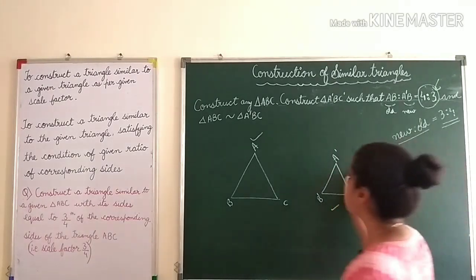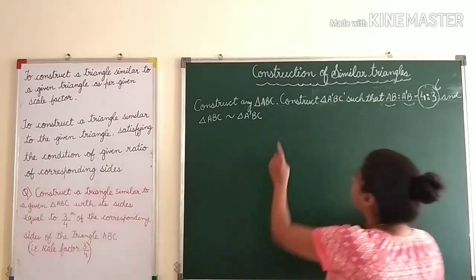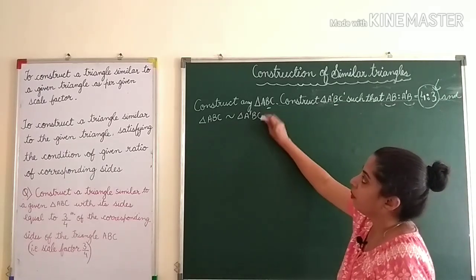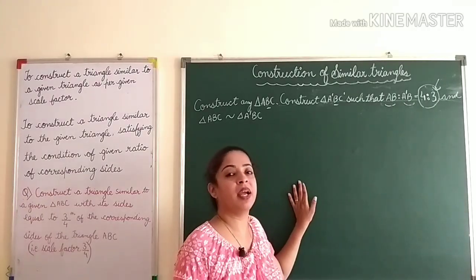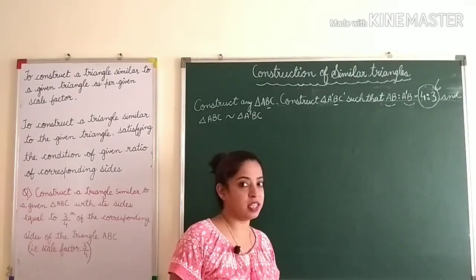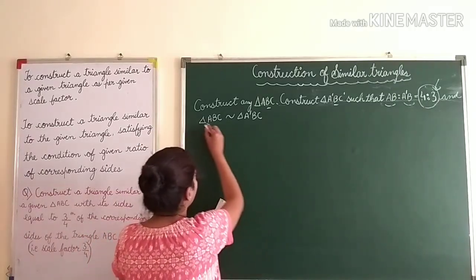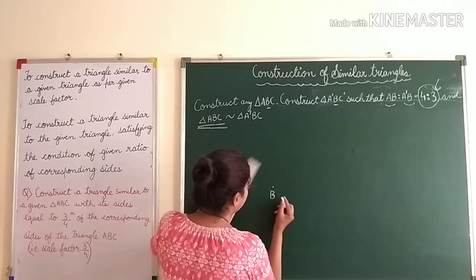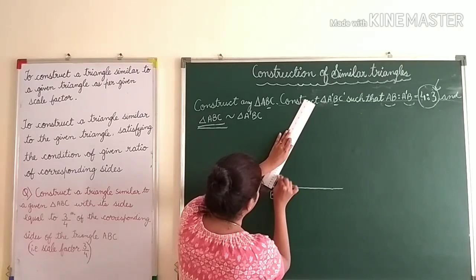Now let us go ahead with the construction. As the question suggests, B is the common vertex. So first we will construct triangle ABC. In your question they might give you specifications — angle A, angle B, or whatever measurements. Here we will simply draw any triangle ABC of our choice.